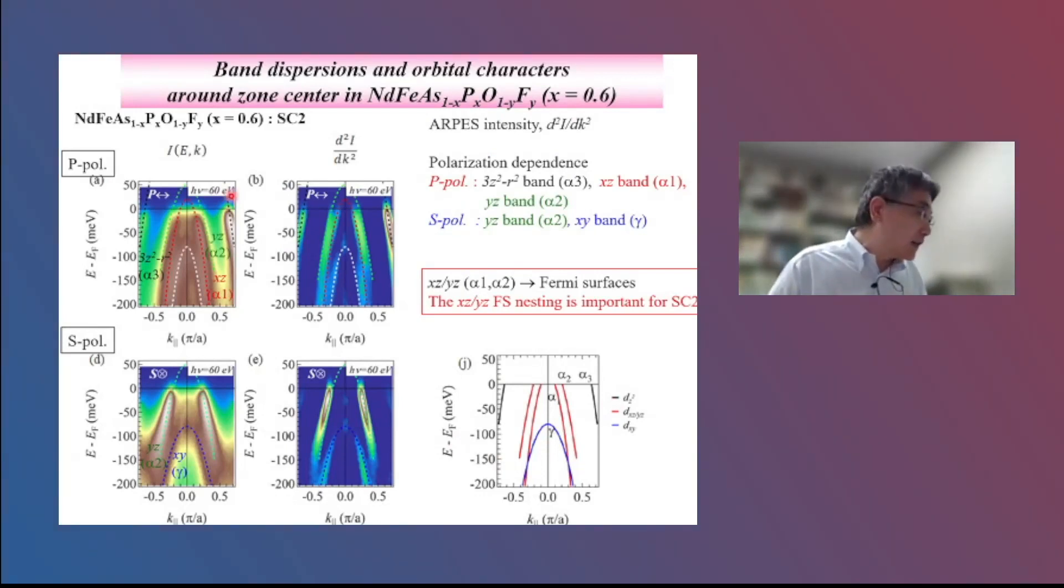So next I show the ARPES for highly phosphorus-doped sample X equal 0.6 in SC2 phase. In P and S polarization, we observe the alpha 1, alpha 2, alpha 3, and gamma bands. So the XZ and YZ bands cross the Fermi level. So these bands make the Fermi surface. So these results indicate that XZ/YZ Fermi surface nesting is important for SC2 phase.